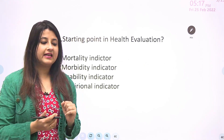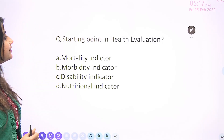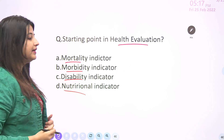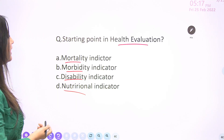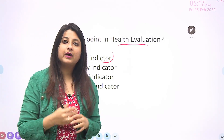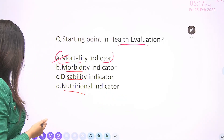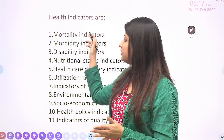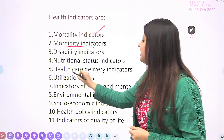Why do you need morbidity indicators when you already have mortality indicators? The starting point in health evaluation is mortality indicators. Whenever we go to evaluate a community, we try to find out about the various mortality indicators. So why do you need to do morbidity indicators? Today we'll be studying about morbidity indicators, healthcare delivery indicators, and utilization indicators.